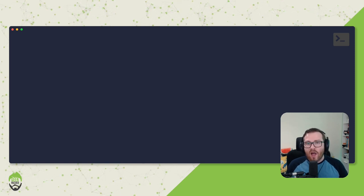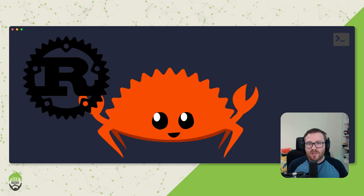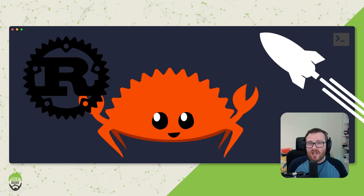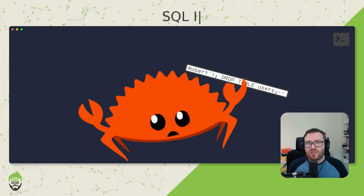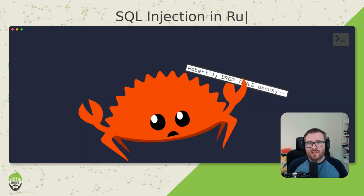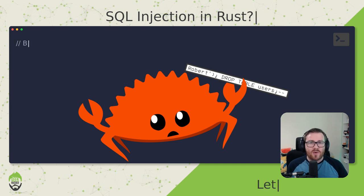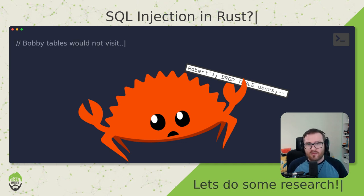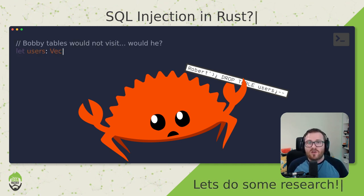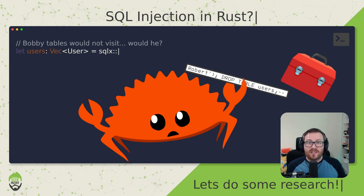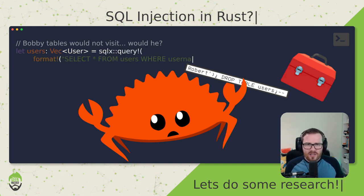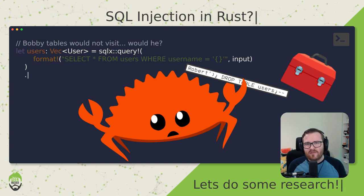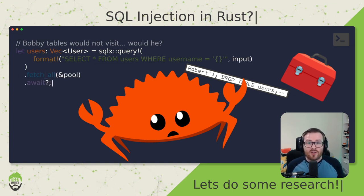Over the past year I've been running a lot of Rust, especially back-end applications, and one of the questions that came up with one of my friends was: can you still get SQL injection in Rust? This is actually a really fantastic question that I wanted to answer myself with a bit of research. I use a framework called SQLX, which is fantastic, and I wanted to see if I could cause SQL injection, or is it secure by default? By the end of this research, you'll hopefully know which is which.